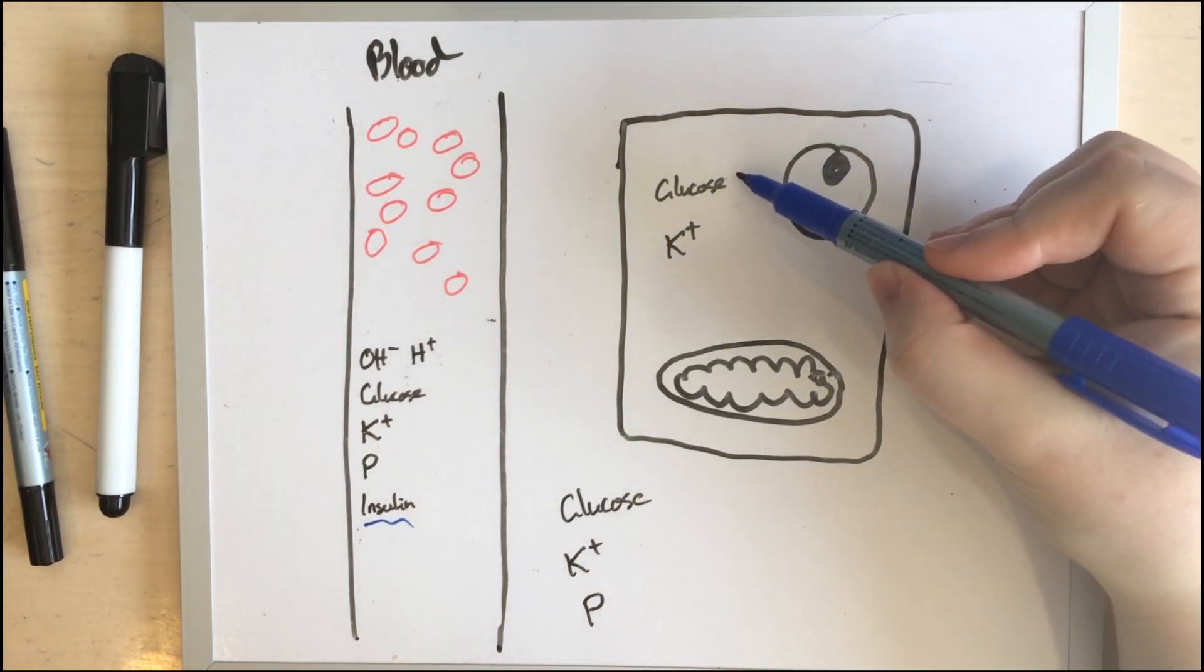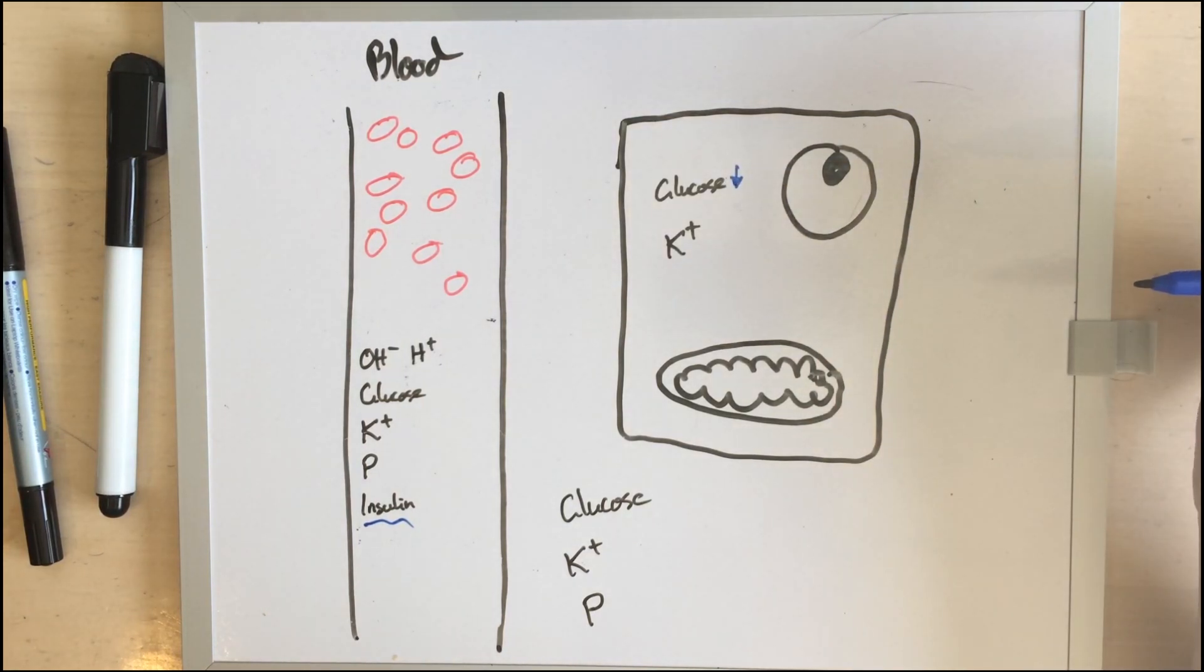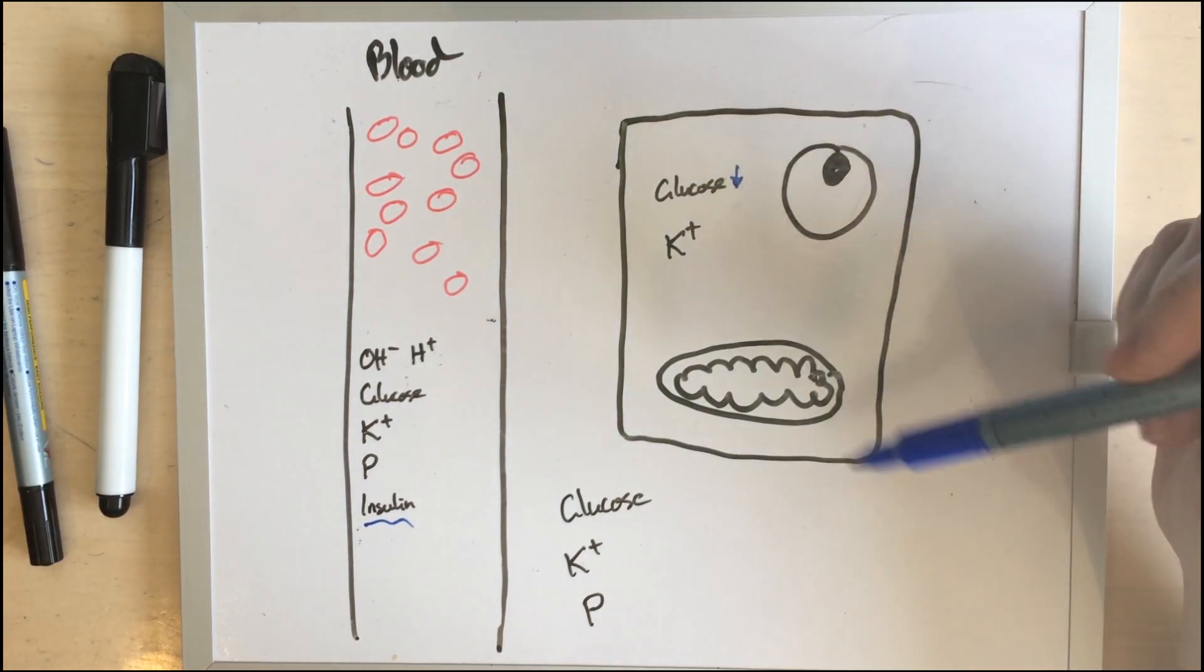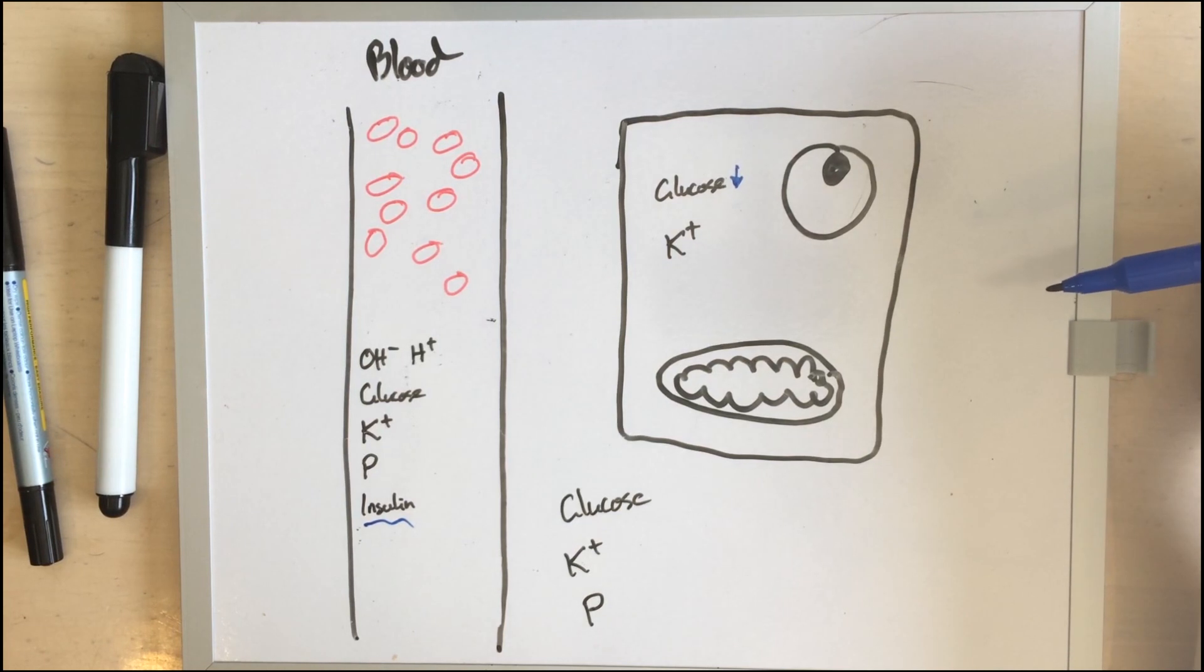Without insulin, glucose does not get into your cells except by passive diffusion, which is just not adequate. And your cells are starving, so they try and stay alive by metabolizing fats, which works, but the fats produce acidic compounds and ketones.